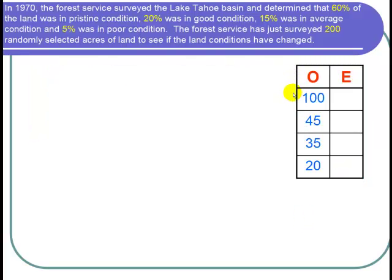Here is the data that they collected. The first 100 corresponds to the number of acres that were in pristine condition, 45 corresponds to the number in good condition, 35 corresponds to the average condition acreage, and 20 corresponds to the poor condition acreage.